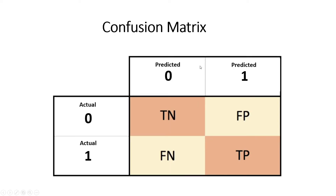We can put these into a matrix form. One side is predicted values and the other side is actual values. If predicted value is zero and actual value is zero — both negative — it's a true negative. If predicted value is one (positive) and actual value is zero (negative), it's a false positive. If predicted value is zero (negative) and actual value is one, it's a false negative. If predicted value is one and actual value is one — both positive — it's a true positive.